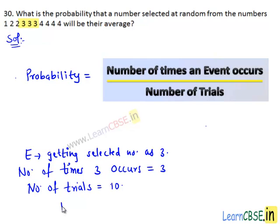Then we have P(E) equals to number of times 3 occurs, which is 3, divided by total number of trials, that is 10, which is equal to 0.3. Hence we got the probability of getting selected number as 3 is 0.3.